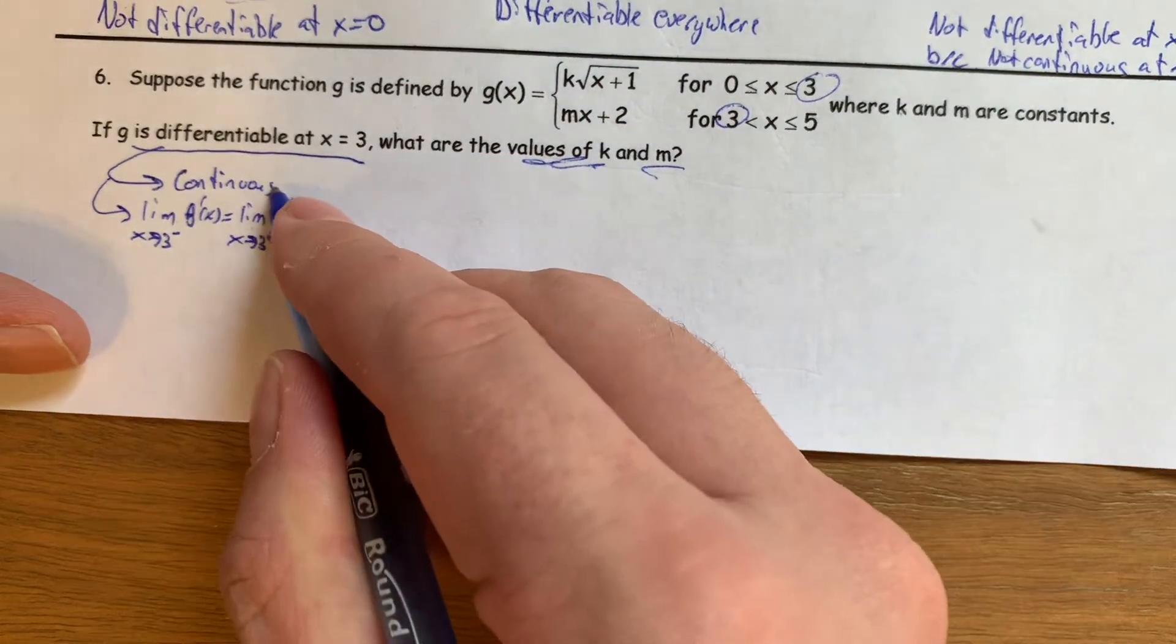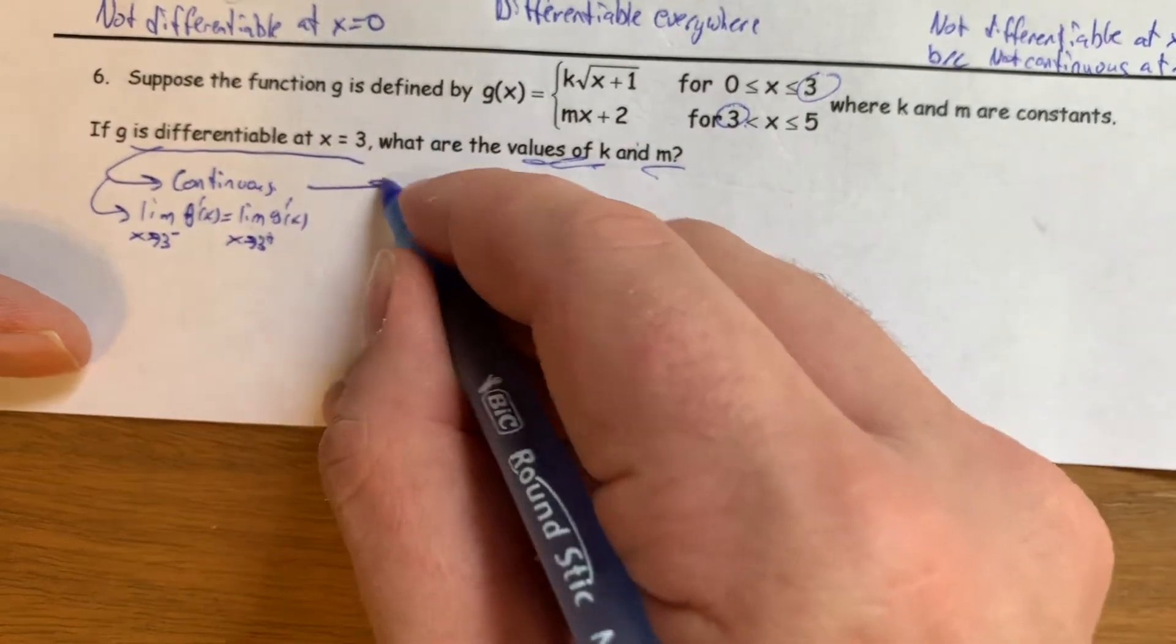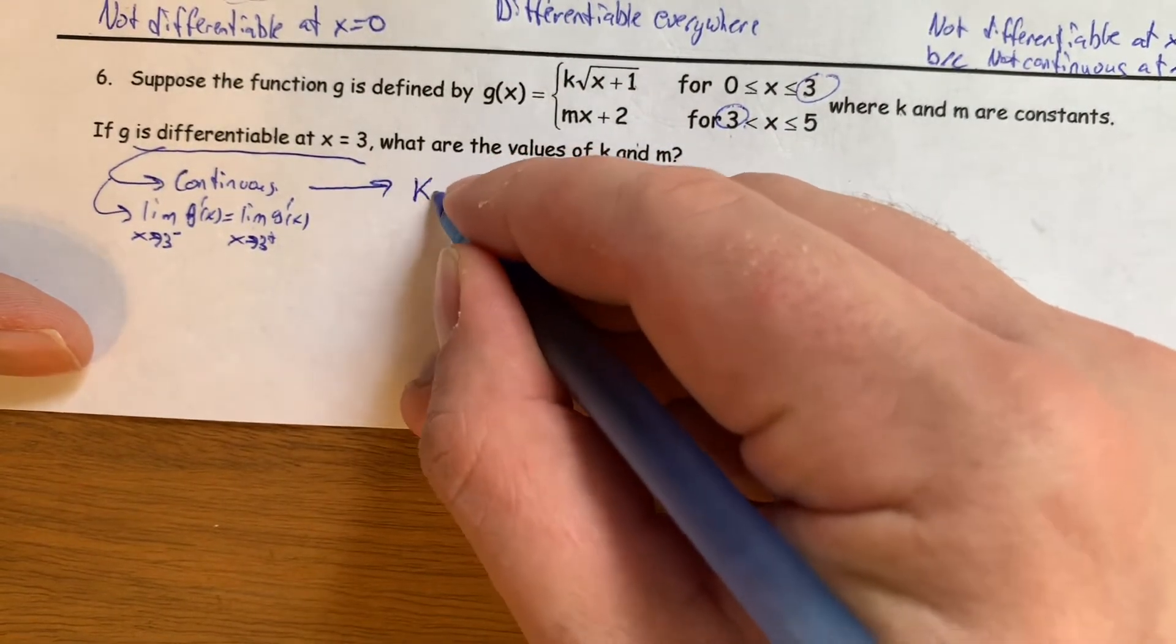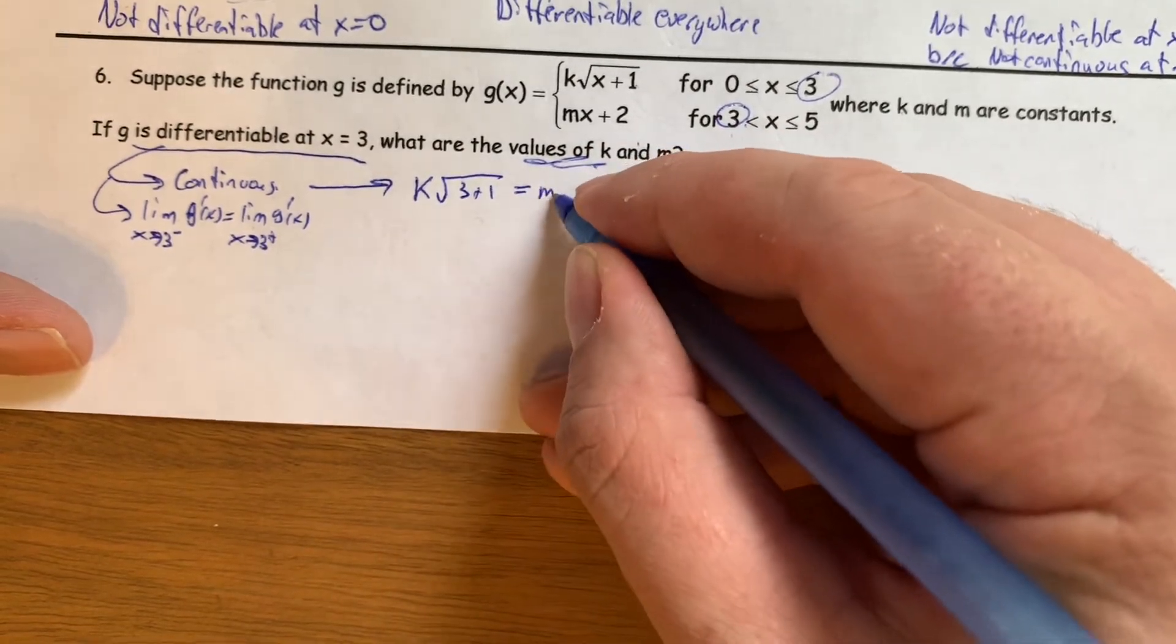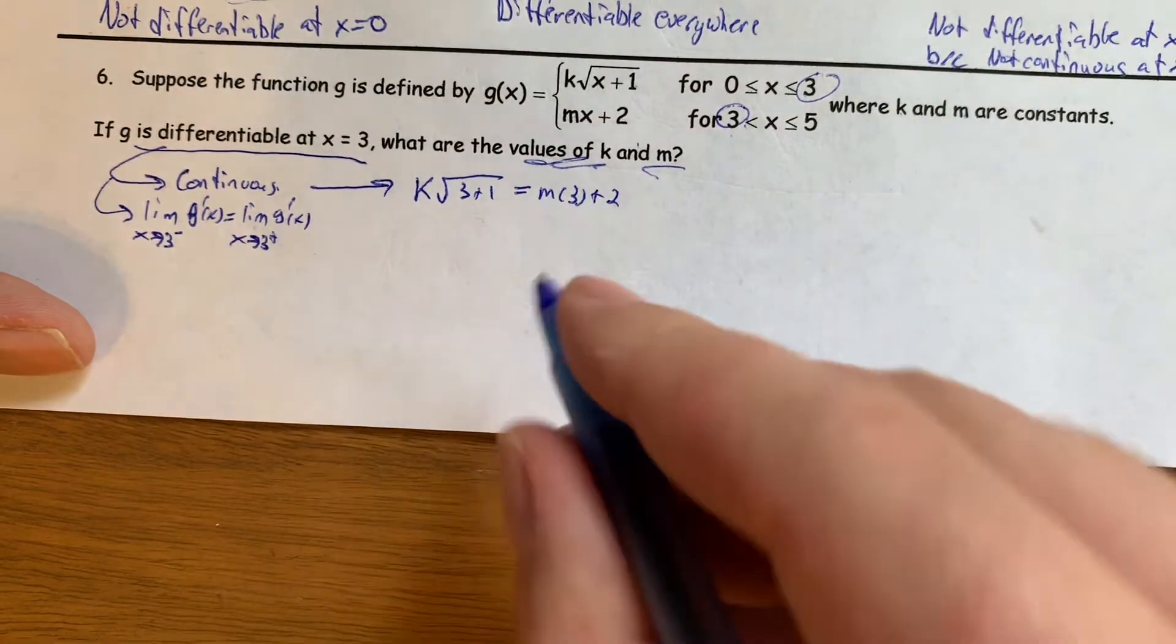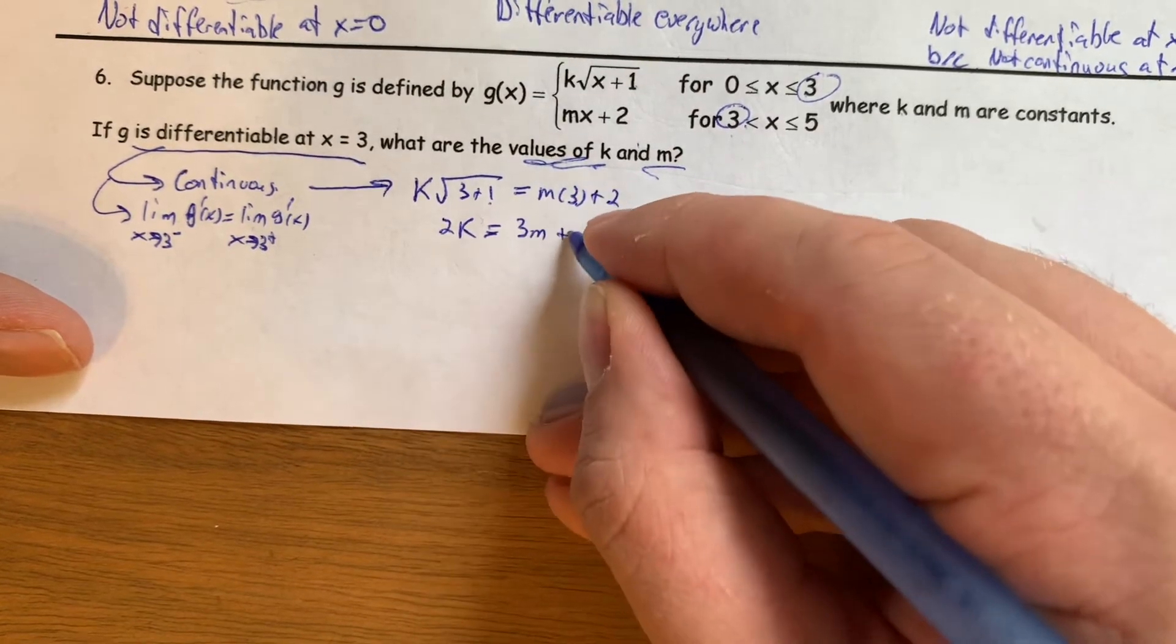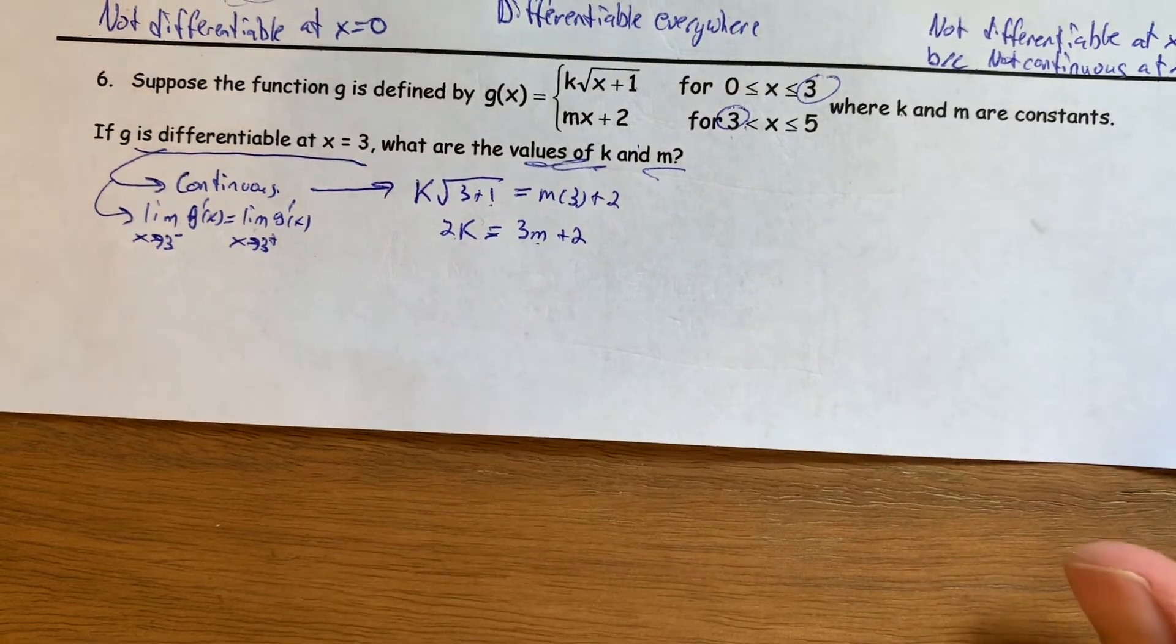So what does it mean for it to be continuous? Well, the limit from the left and the limit from the right need to be the same. So the continuous one is I can just plug in 3 into these two values, and I can get that k times the square root of 3 plus 1 has to equal m times 3 plus 2. This is to be continuous. So 3 plus 1 is 4, square root of 4 is 2. 2k equals 3m plus 2. This is two variables in an equation, and that's not enough to solve.